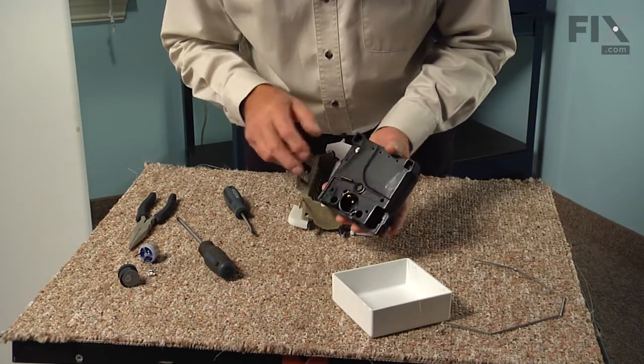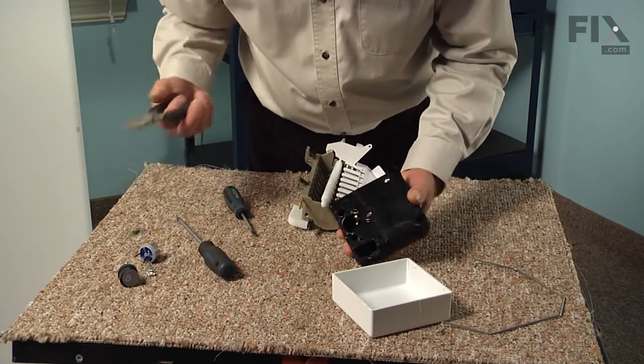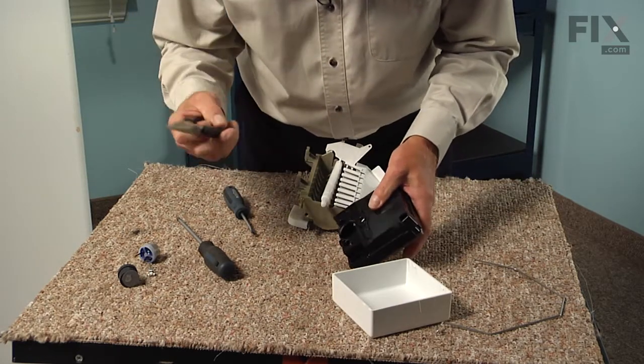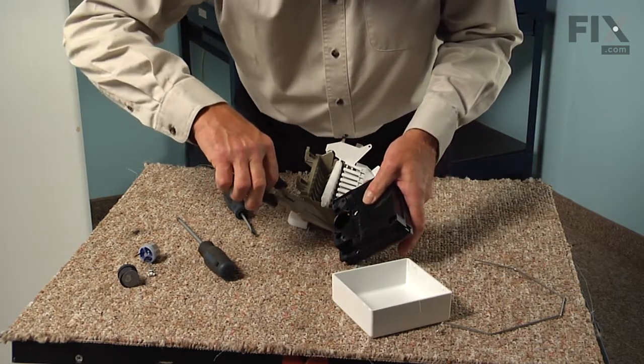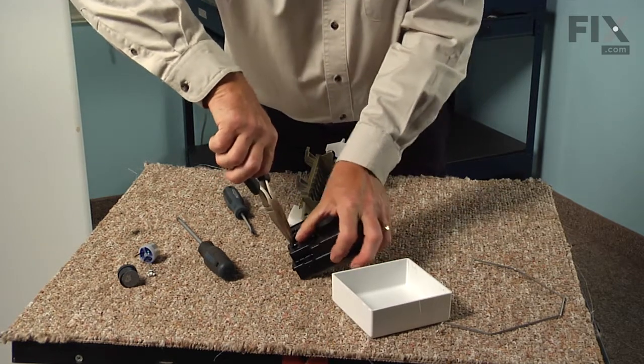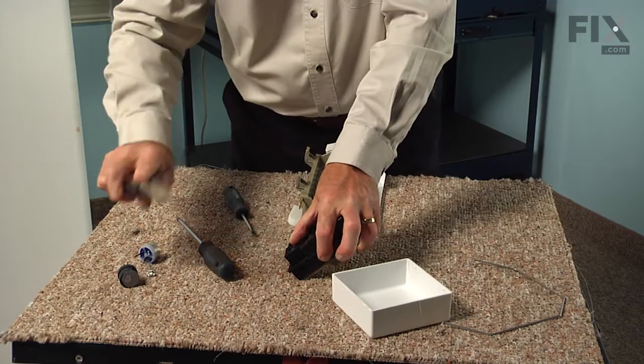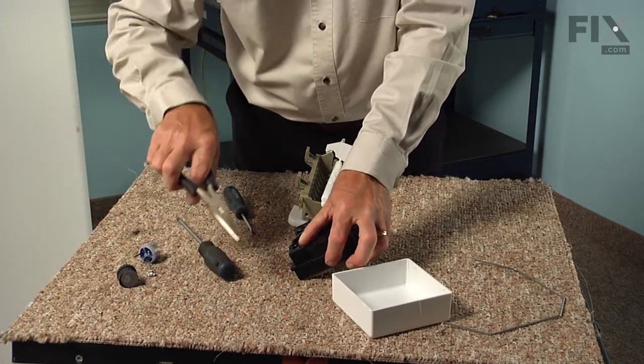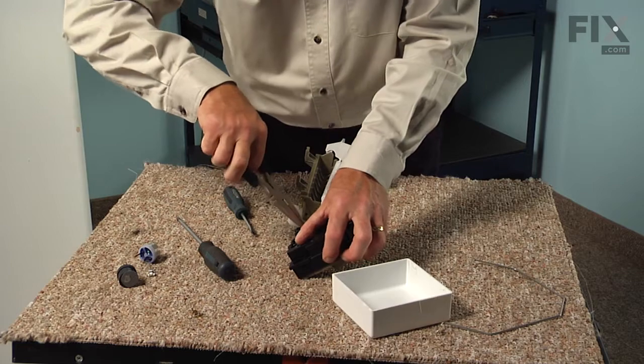We'll then turn our attention to the ice maker head and we're going to remove the two contact clips that are fastened in there. So with a pair of needle nose pliers, we're just going to pull those straight out, take note of how they fit in there and then set them aside.